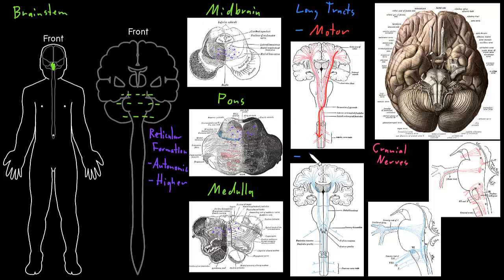The second category shown in this drawing are somatosensory long tracks. There are different kinds of somatosensory tracks carrying information through the nervous system, but this one shows somatosensory information coming up the spinal cord, crossing and going up the brainstem, then going to the cerebrum on the other side from the body. So the brainstem is playing host to these long motor and somatosensory tracks carrying information up and down between the cerebrum and the spinal cord. Additionally, most of the cranial nerves are attached to the brainstem.